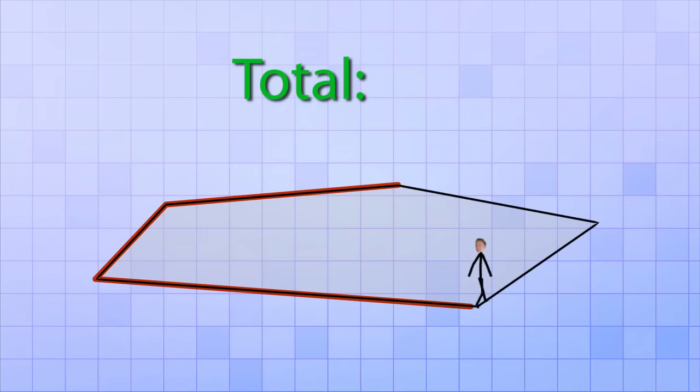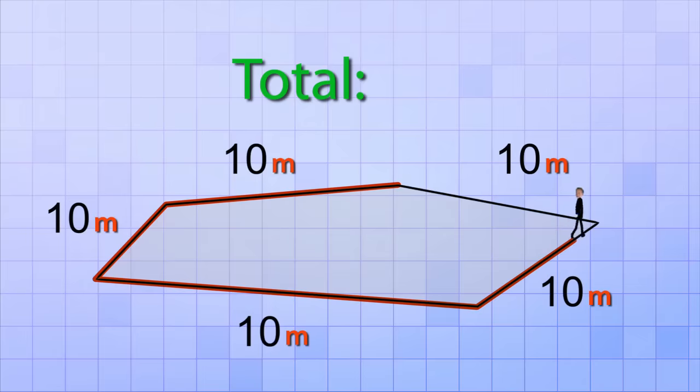In this case, if the length of each side of the polygon was 10 meters, the total length you would travel along all five sides would add up to 50 meters.